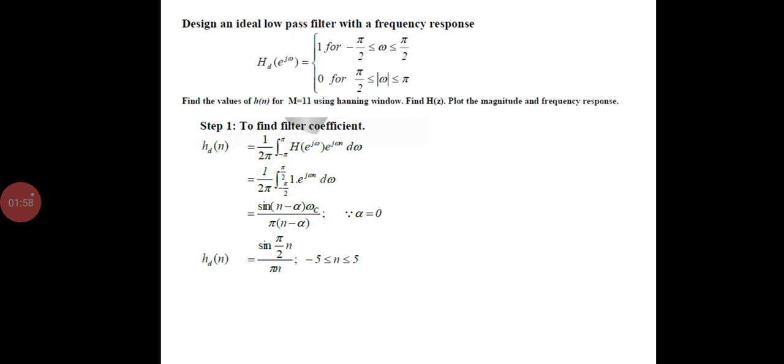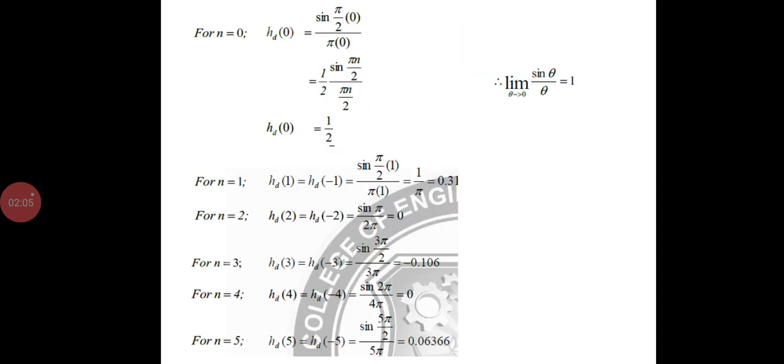First step, we want to find the value of h(n). We apply the formula and find h(n). We know that n value varies from -5 to 5, therefore by applying the values we find all the values.